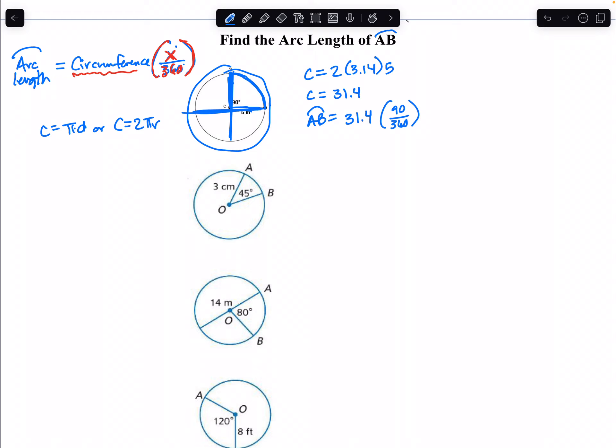So to find arc length, we're going to take our circumference and multiply it by 90 over 360. 90 divided by 360 simplifies to one-fourth. So when you multiply that, 31.4 times one-fourth is 7.85 inches. That is how much this length is.